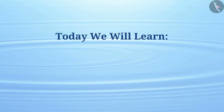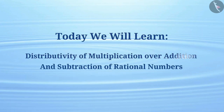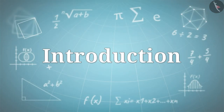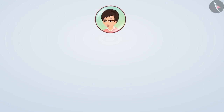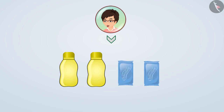Today we will learn distributivity of multiplication over addition and subtraction of rational numbers. Just think: Nishant buys two identical bottles of juice and two identical chocolates from a shop.